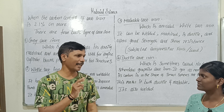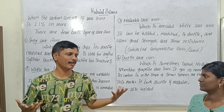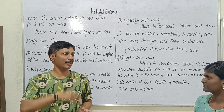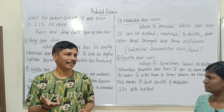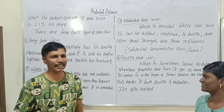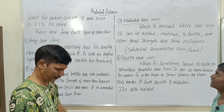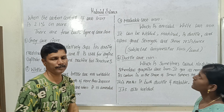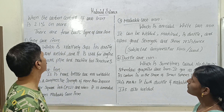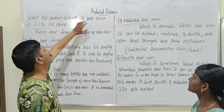Carbon is cut. Low carbon — it's steel. When the carbon content of cast iron is 2.1% or more, there are four basic types of cast iron. Carbon content of two or more is cast iron.